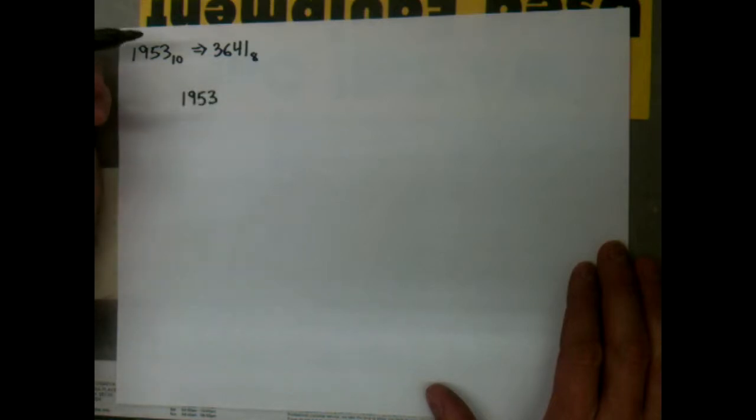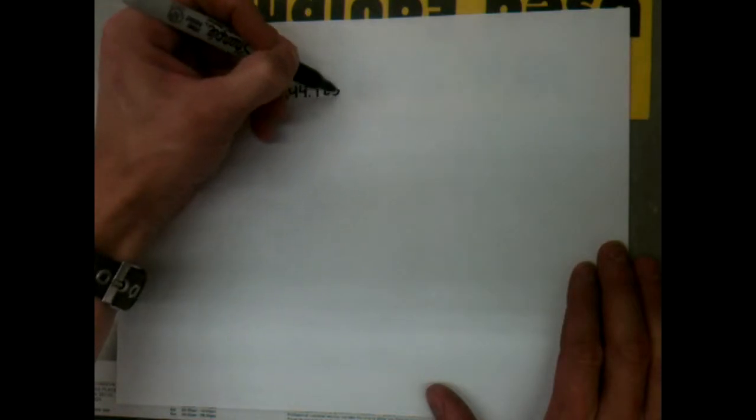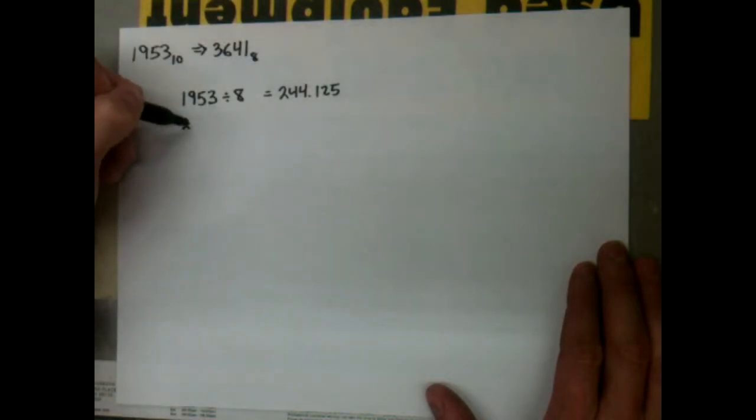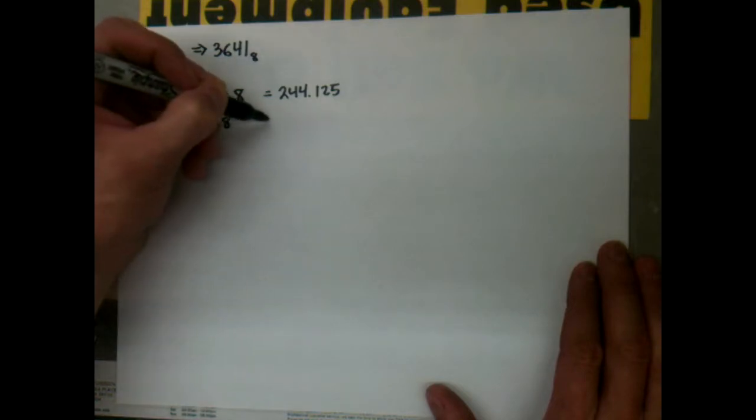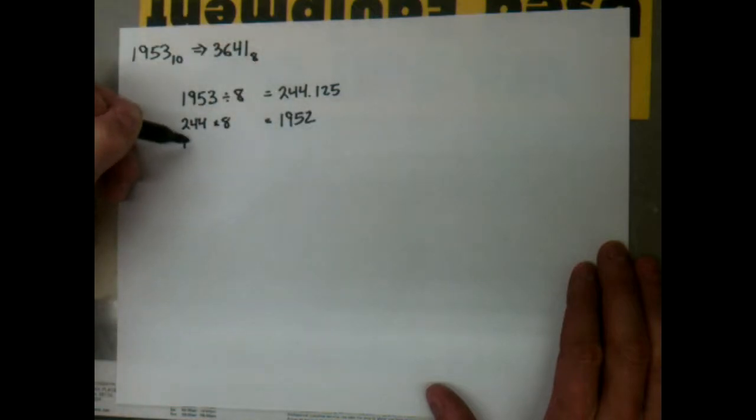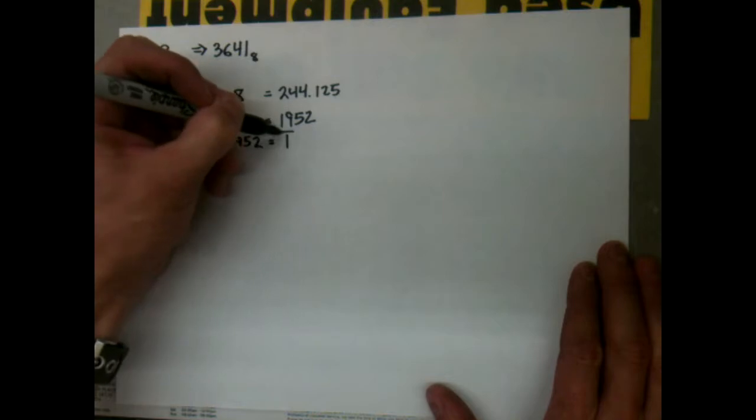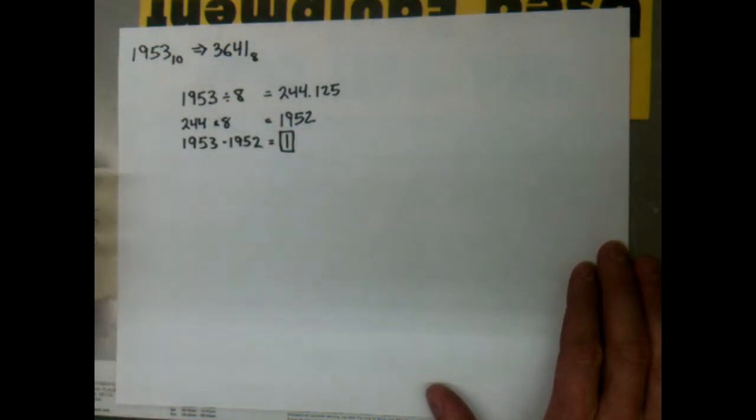We end up with 244.125. We take 244, multiply it by 8, and that gives us 1952. Take our original number, subtract the new number we just got, and that gives us 1. We're going to box it because that number is going to be important to us later.